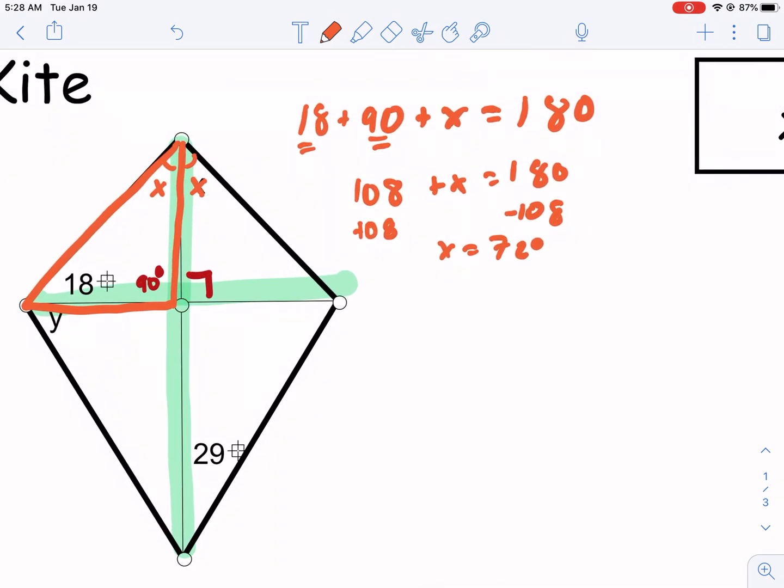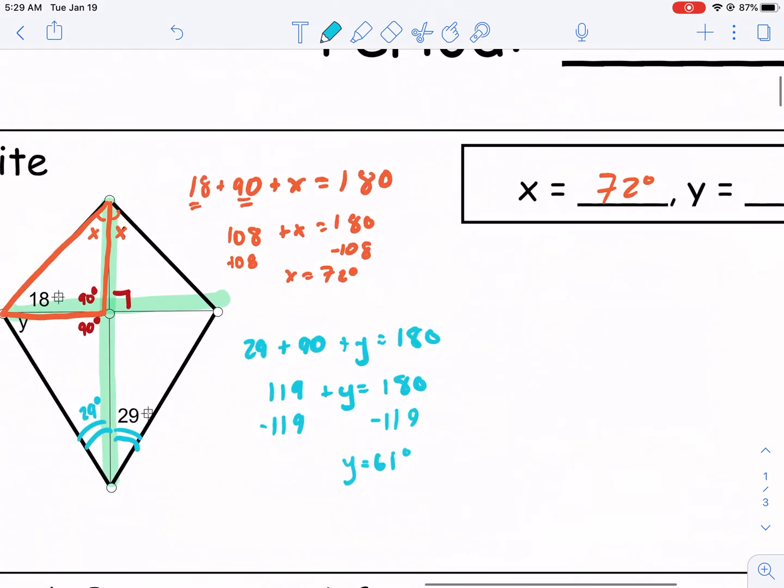Now we have to find y. We know this is 90 again - all four of these intersections are 90. And if this is 29 right here, that makes this one 29. These angles are not the same though. We have to consider this big isosceles triangle. So we have 29 plus 90 plus y equals 180. We have 119 plus y equals 180. Subtract 119 from both sides. We get 180 minus 119, which gives us 61. y equals 61 degrees. And that's all there is to it.